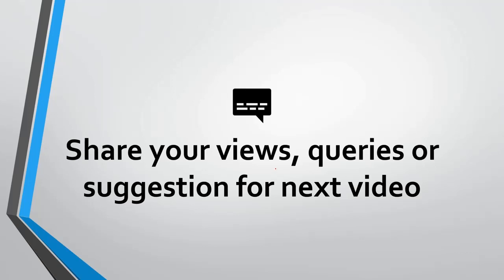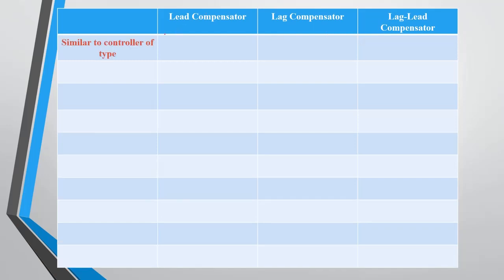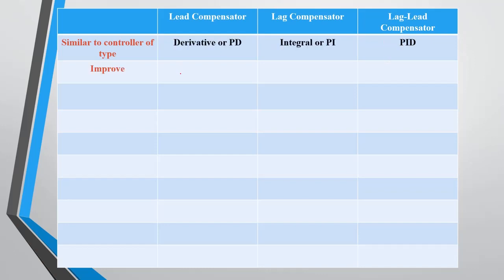Basically we have three types of compensator: lead compensator, lag compensator, and lag-lead compensator. Lead compensator is similar to derivative or proportional-derivative type of controller. Lag compensator is similar to integral or proportional-integral type of controller. And lag-lead compensator is similar to PID, which is proportional-integral-derivative type of controller.